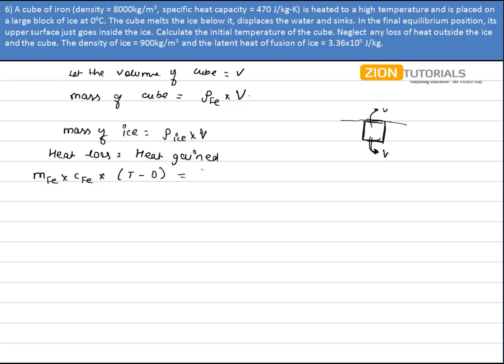And the second one is equal to heat gained, that is the mass of ice into latent heat of ice. Because the heat is gained by the ice and because ice is melting but the temperature is not rising, so it will be equal to only ml.